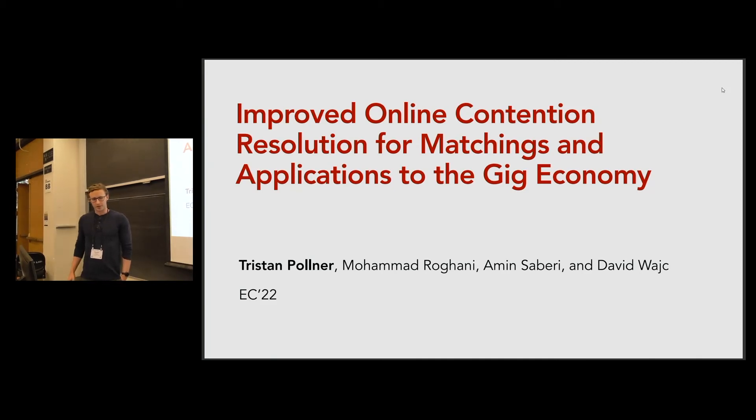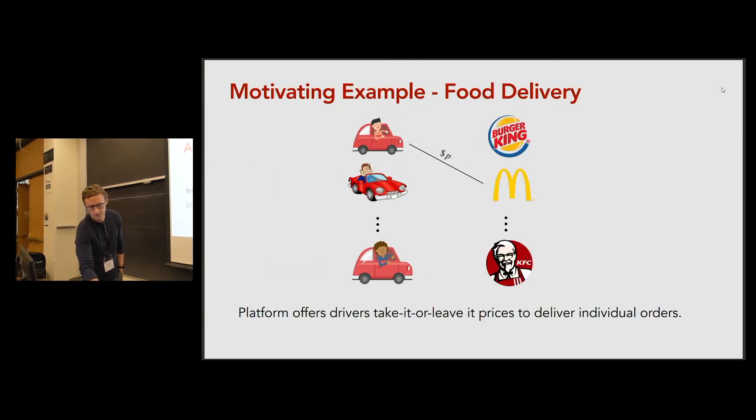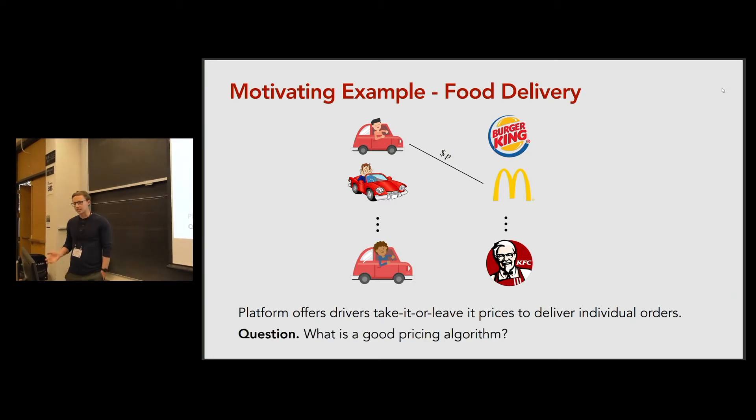Thanks everyone for being here for one of the final talks of today. I'm going to talk about improved online contention resolution for matchings and applications to the gig economy. This is joint work with Mohammad Rogani, Amin Sabari and David Weitz. For a motivating example, consider the problem faced by a food delivery platform. Often such platforms will batch local orders over a small interval of time and then deliver these orders by offering drivers take it or leave it prices. A natural question is, constrained to this simple mechanism, what is a good way to set these prices?